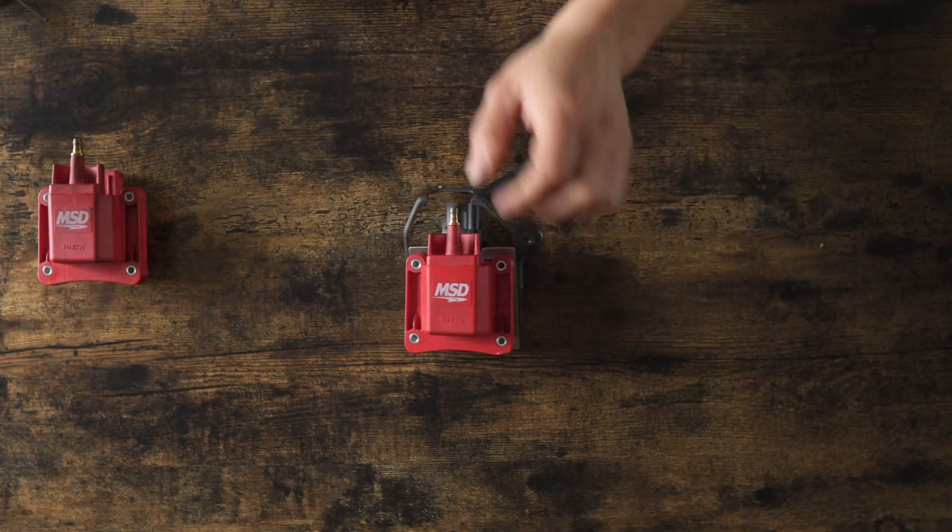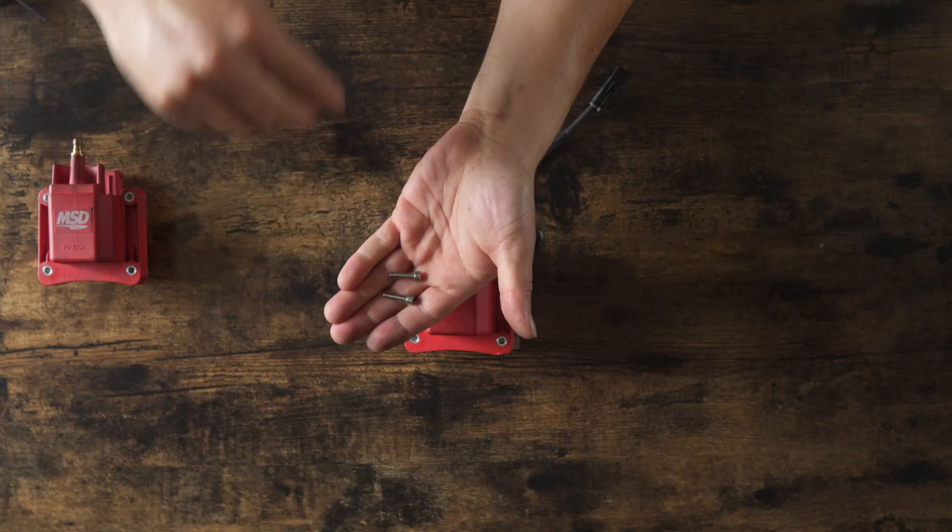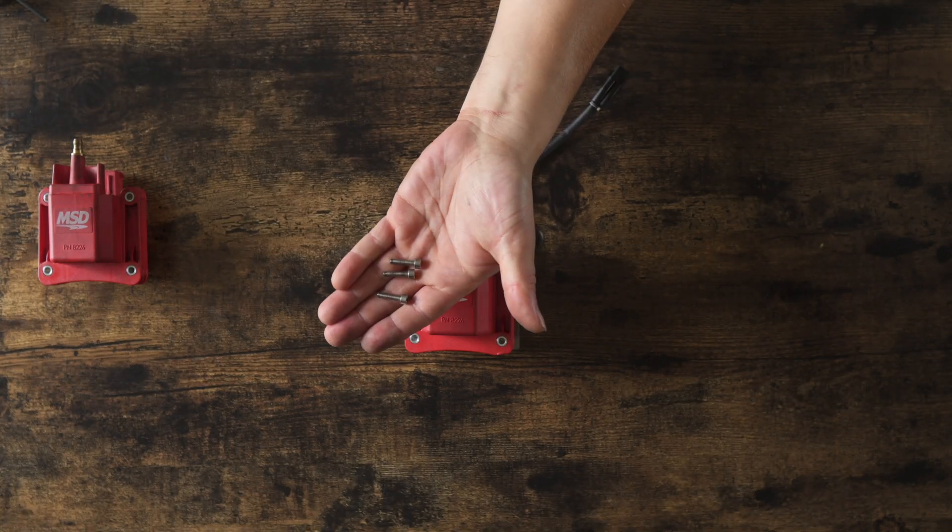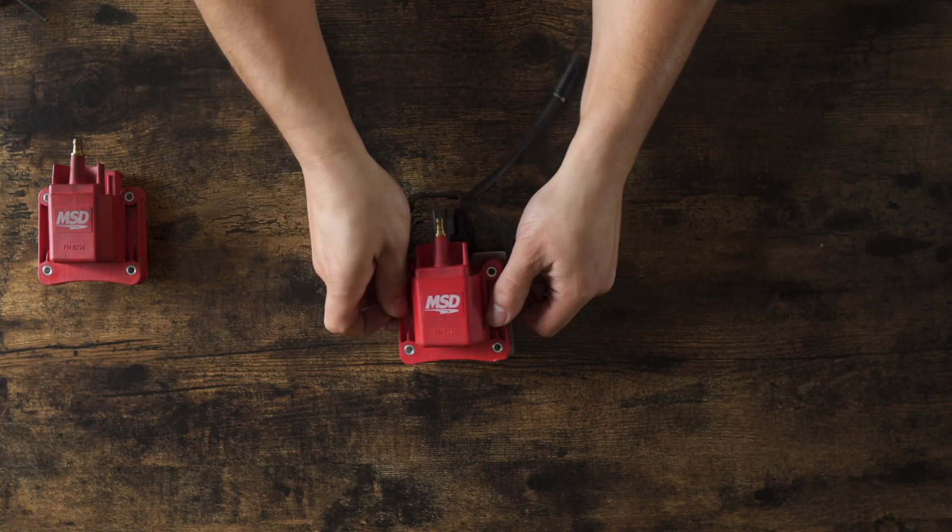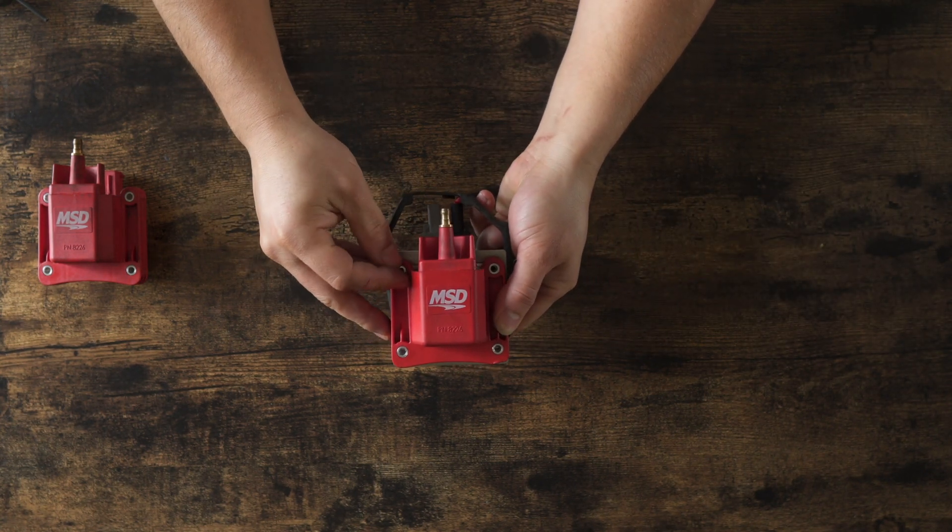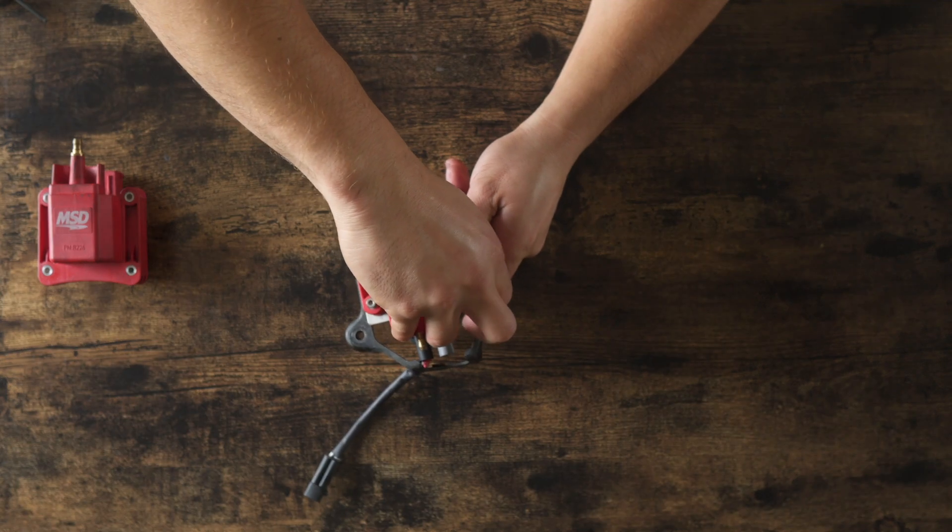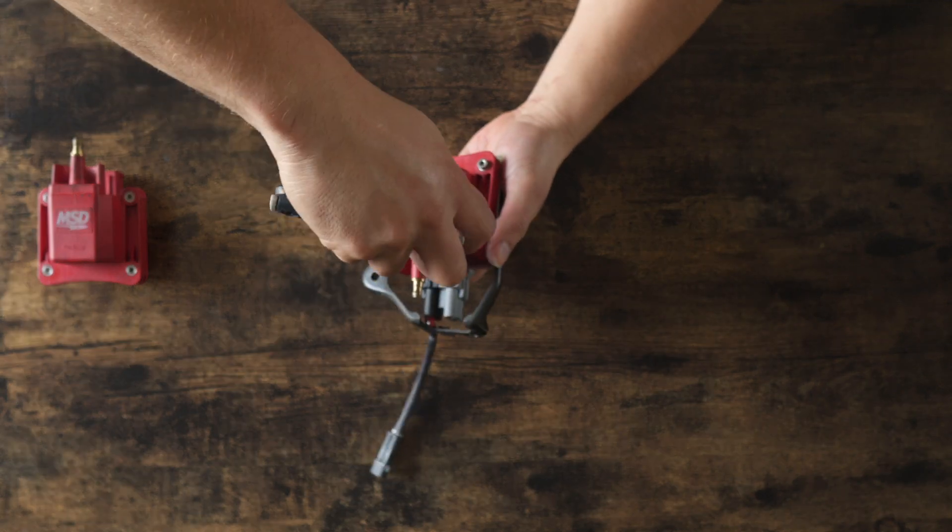And then you have four socket head screws, 16 millimeters in length, and then you will fasten each corner of the ignition coil. Make sure you thread them in first, and we are going to tighten these up.